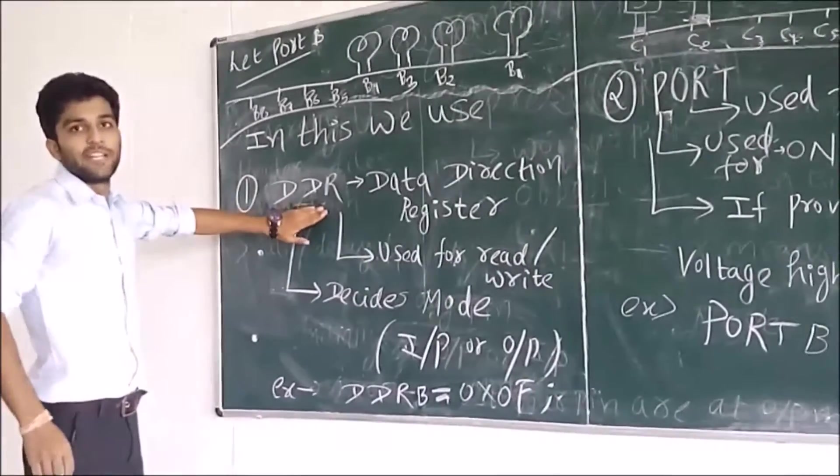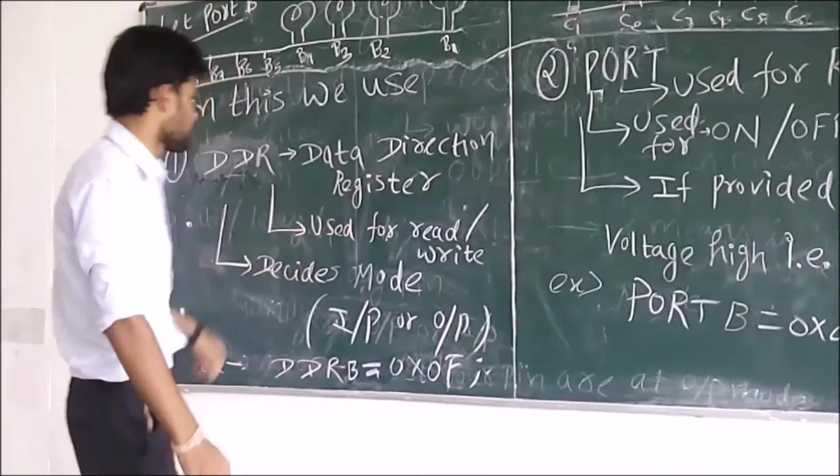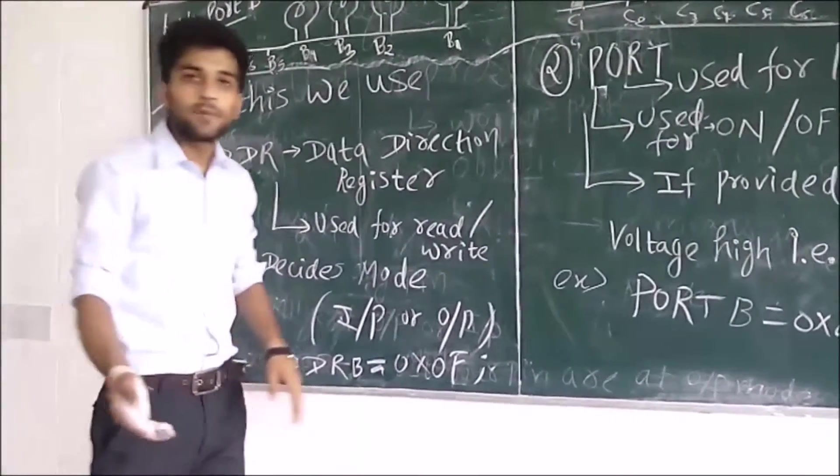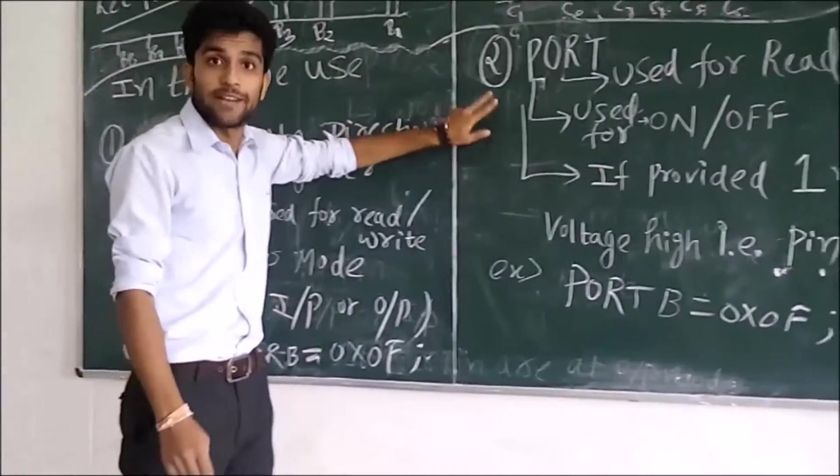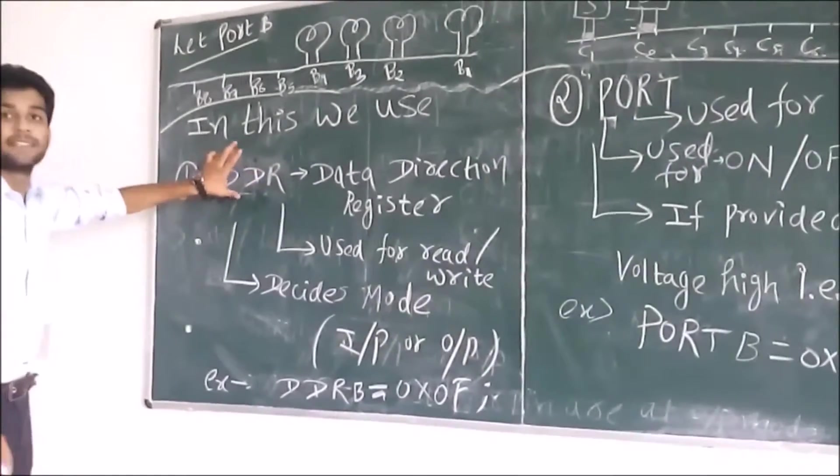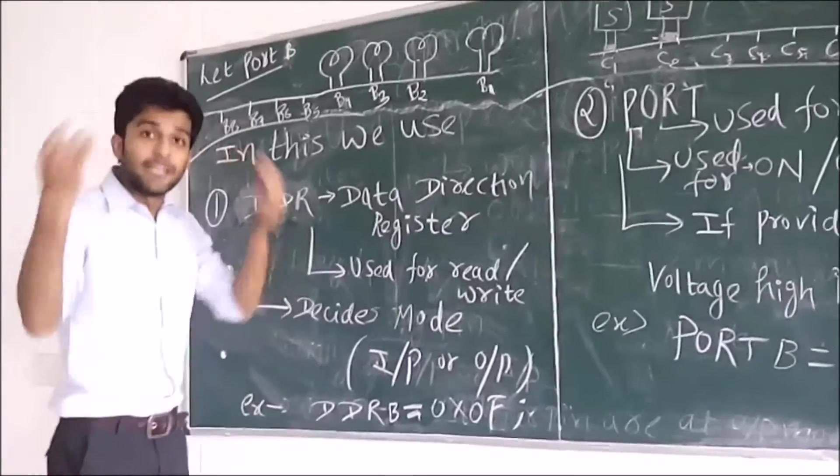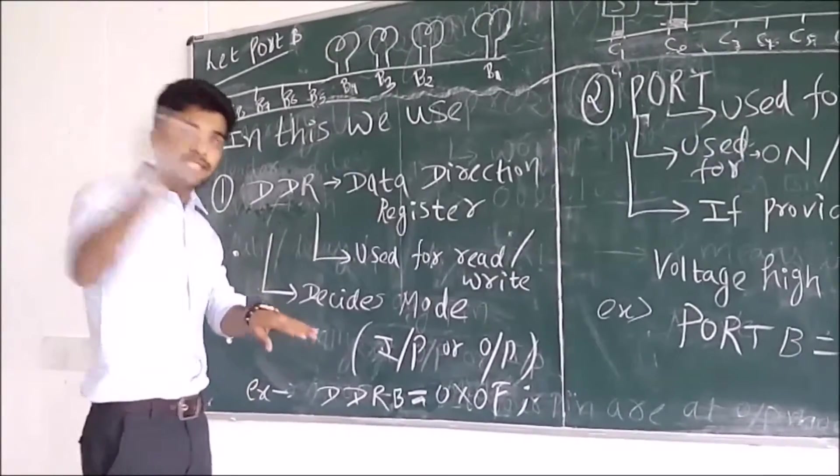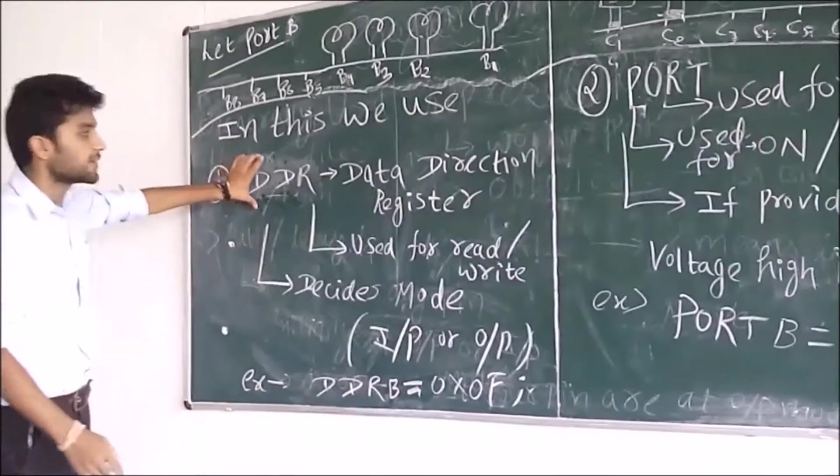But, what is DDR? It means Data Direction Register. It is used for reading purpose as well as for writing purpose. Then, PORT is used for reading purpose as well as writing purpose. But, PIN is used only for reading purpose. What is the main function of DDR? It decides whether a pin is in input mode or output mode.